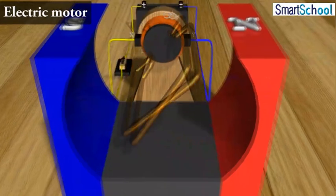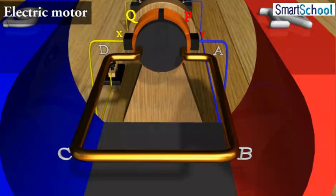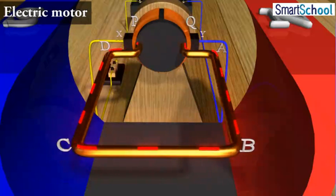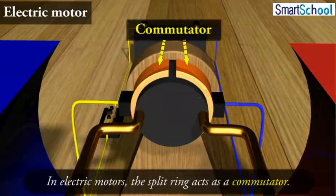At half rotation, Q makes contact with the brush X and P with brush Y. Therefore, the current in the coil gets reversed and flows along the path DCBA. A device that reverses the direction of flow of current through a circuit is called a commutator. In electric motors, the split ring acts as a commutator.